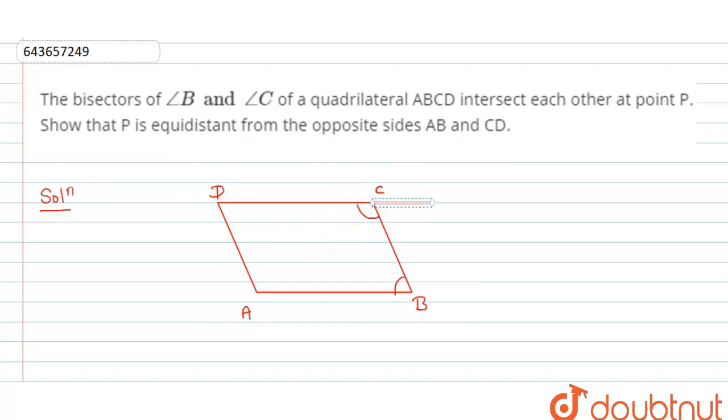Suppose this is somewhere point P. So this is our point P. This line is intersecting at point P.